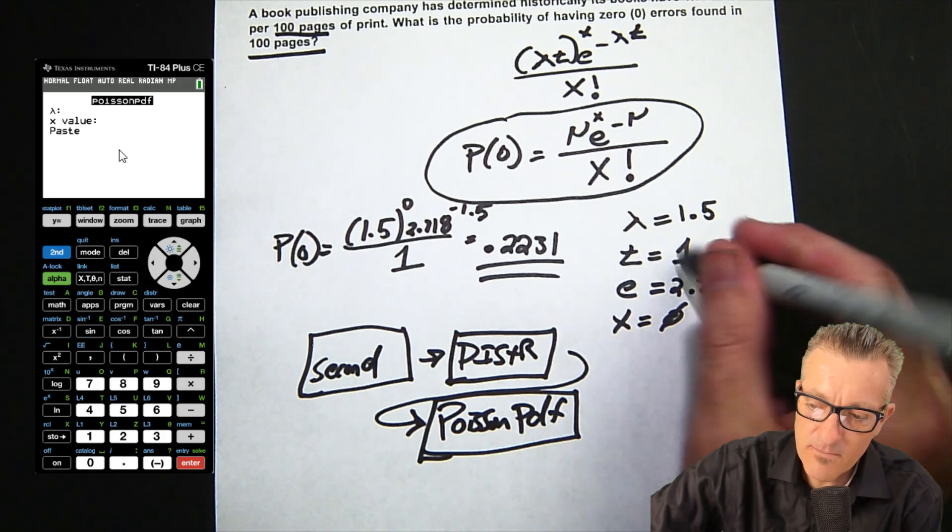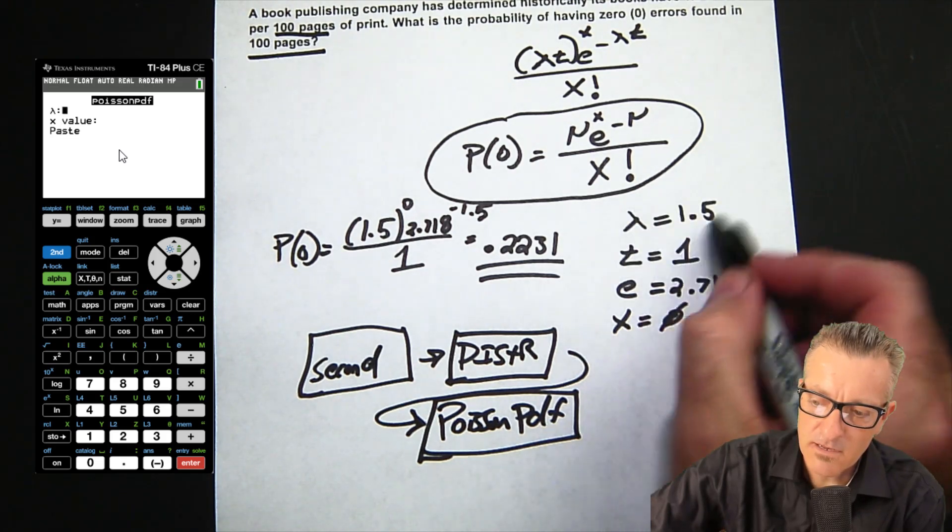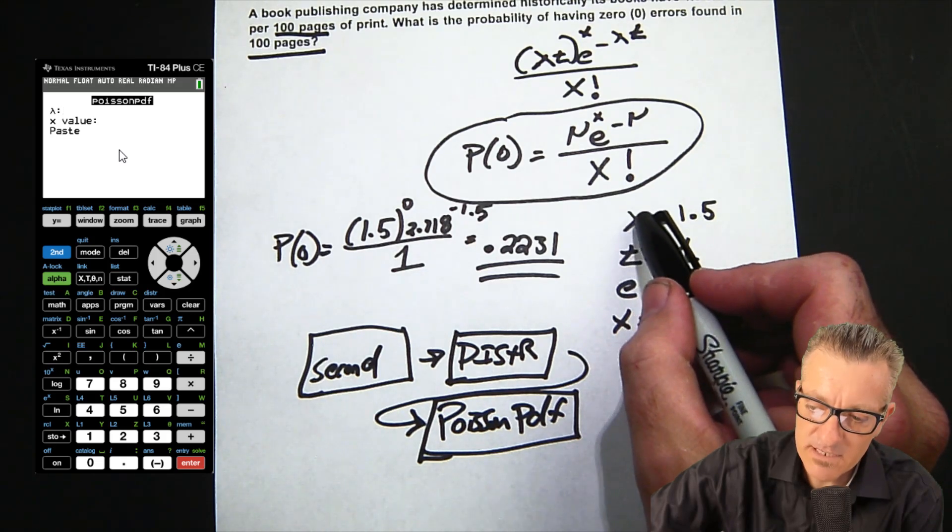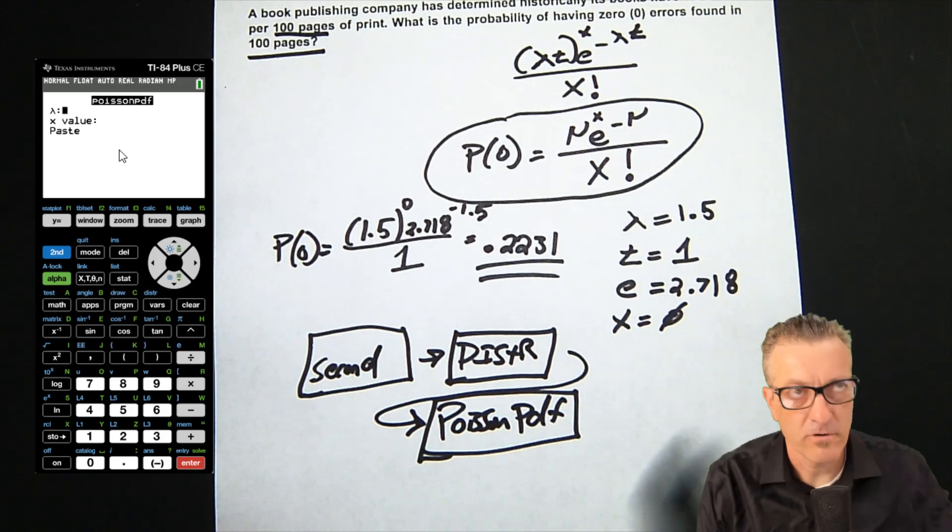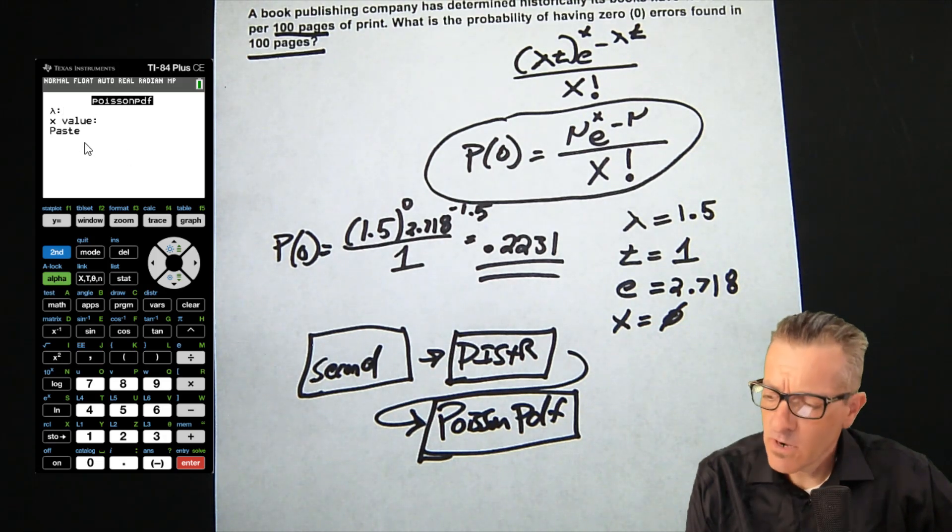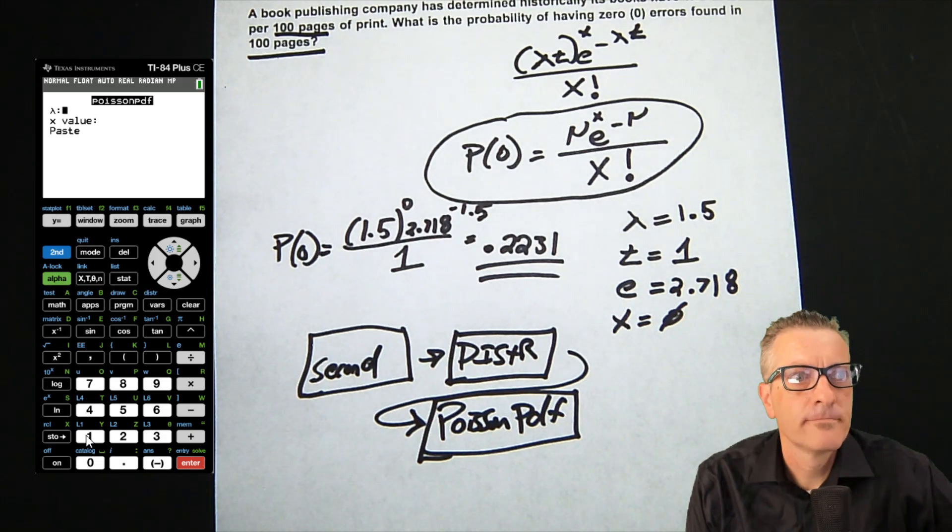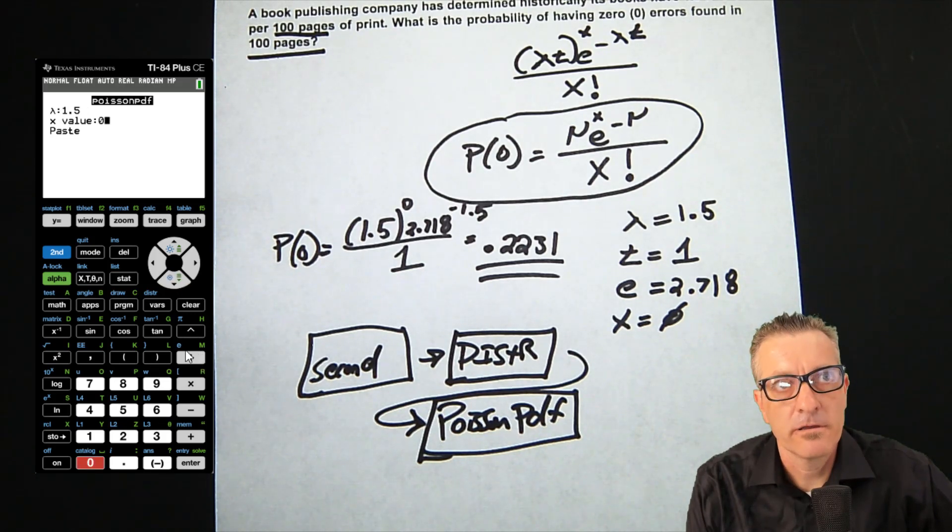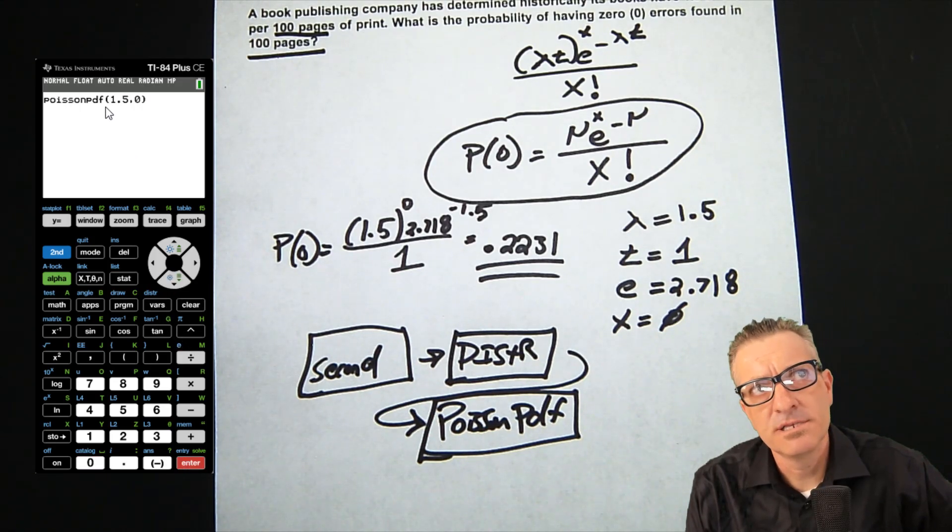But if this was different, which it will be in later calculations, you put in the mu calculation—not just the lambda, but the lambda times T. For lambda in the calculator, I'm going to put in 1.5, then go down, and our X value is 0.